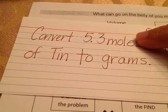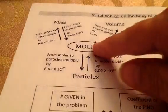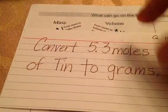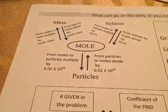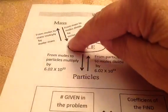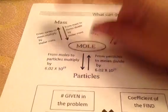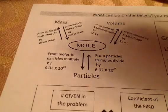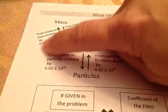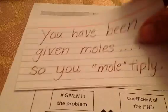In this problem, I'm starting out with moles. So if you start out with moles, when I go to look at my mole map, I'm starting in the center at moles, and the problem is asking me to go to grams. Grams is a measure of mass, so I'm going to be following this arrow up to the mass line. To go from moles to mass, you multiply by the molar mass.